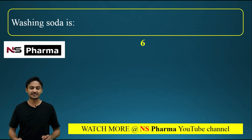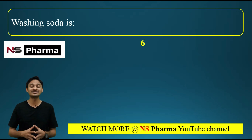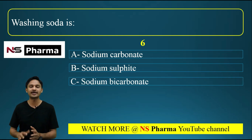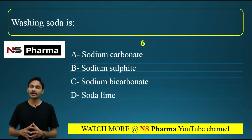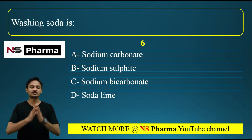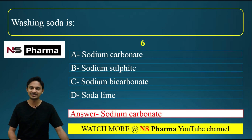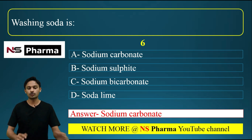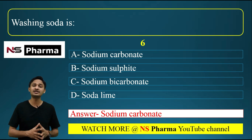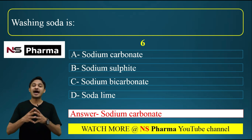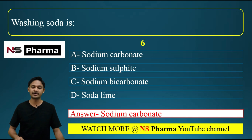Question number 6: Washing soda is — options are: A) sodium carbonate, B) sodium sulfite, C) sodium bicarbonate, D) soda lime. The correct answer is option A: sodium carbonate is known as washing soda. Sodium bicarbonate, by contrast, is called baking soda.